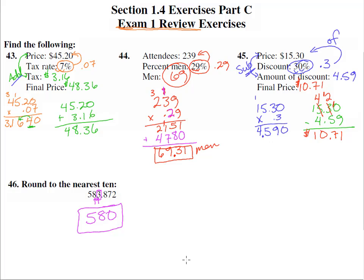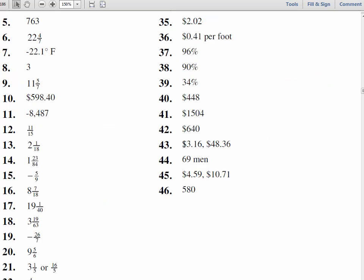Let's double check these answers. There we have on 43 the $3.16 in tax and then the final, we have 69 men on 44, we have the discount of $4.59 and the $10.71 is the final price, and 580.